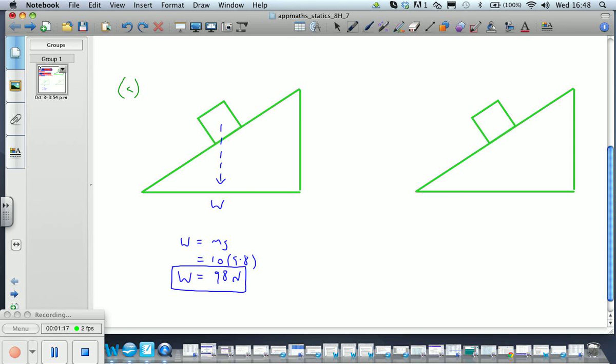We also have a contact force R. We have a force which is preventing the object from moving down; that's 19.6 newtons.